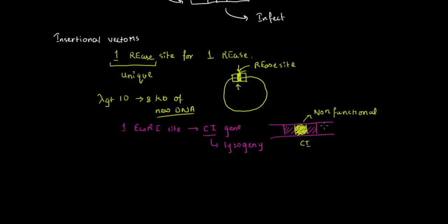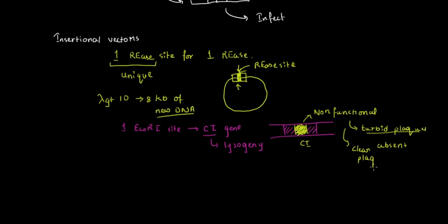When you open up the cI gene and insert your DNA of interest, the cI gene becomes non-functional. Because the cI gene is non-functional, there are no turbid plaques. Every time you do this, the bacteriophage lambda will always go into the lytic phase, which is why instead of turbid plaques, all plaques will be clear. The insertional vector thus involves inserting your DNA of interest by cutting open a part of the lambda genome.